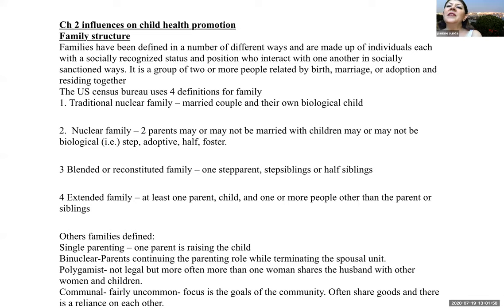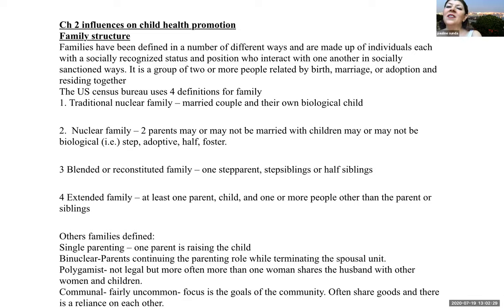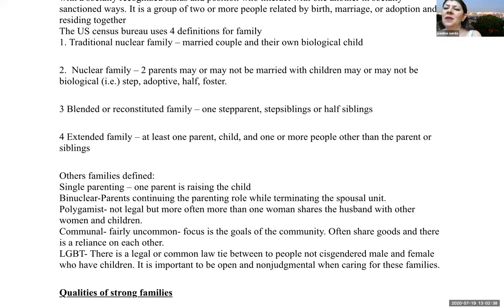Next, we're going to talk about the influences on child health promotion. The first thing we'll address is family structure. Families are made up of individuals with a socially recognized status and position who interact in a socially sanctioned way — a group of two or more people related by birth, marriage, or adoption who live together. The US Census Bureau uses four definitions for family. The first is the traditional nuclear family: a married couple and their own biological child.